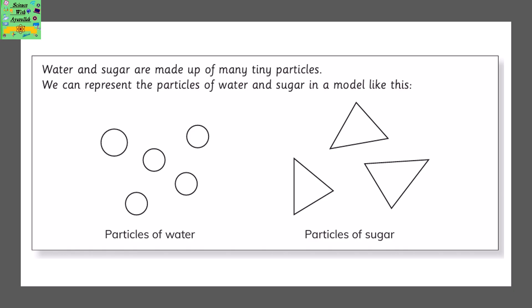Water and sugar are made of tiny particles. We can represent the particles of water and sugar in a model like this. The particles of water are circular in shape and the particles of sugar are triangular.